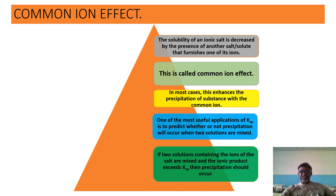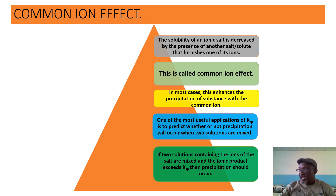This is what we call the common ion effect: the solubility of an ionic salt is decreased by the presence of another salt or solute that furnishes one of its ions. We've just seen that sodium sulfate furnishes the sulfate ion just like radium sulfate does. So in the presence of sodium sulfate, the solubility of radium sulfate was drastically reduced. In most cases, this enhances the precipitation of substances with a common ion.